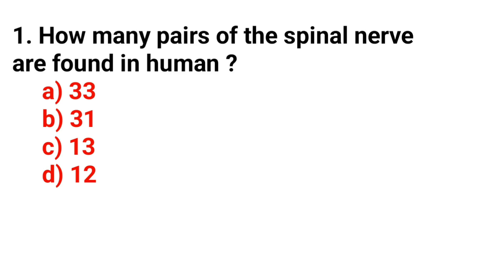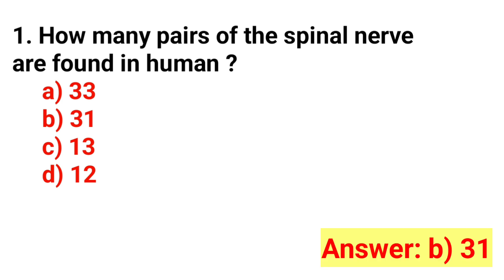Question number 1. How many pairs of spinal nerves are found in humans? The answer is Option B: 31.